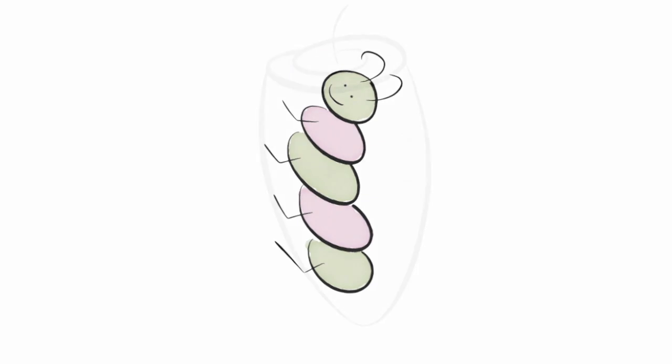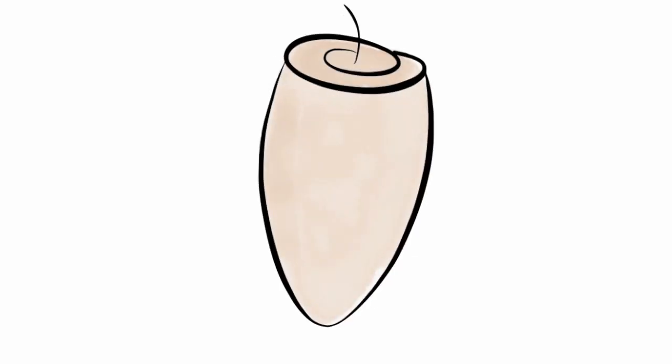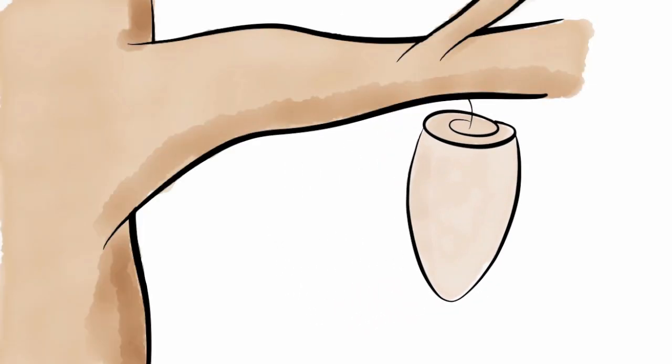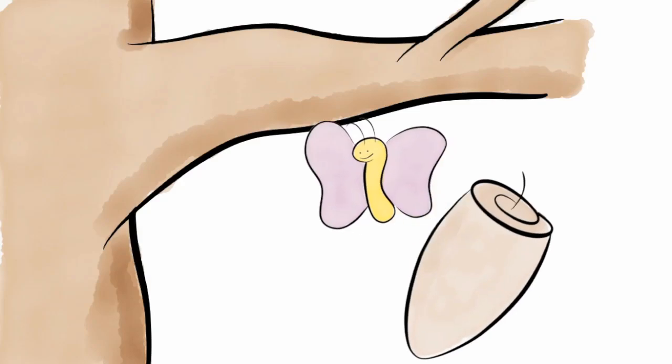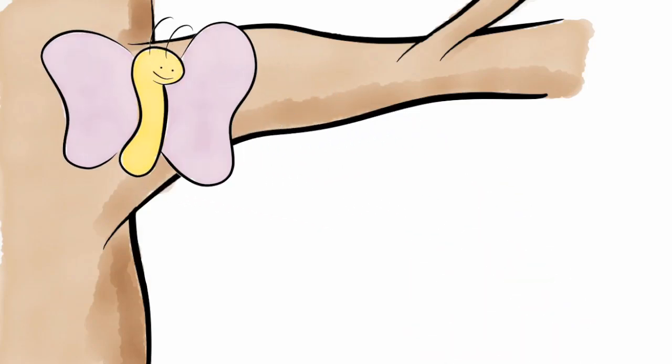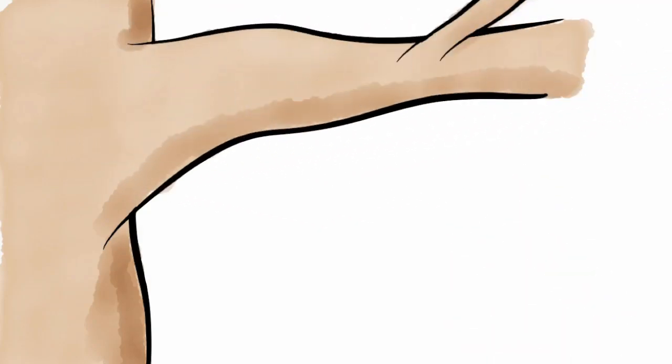Next, the larva makes a pupa. During the time in the pupa, the organism develops complex organs, then emerges as an adult butterfly.